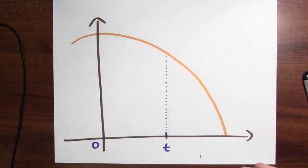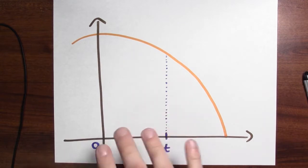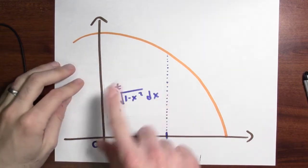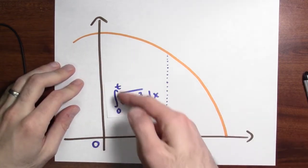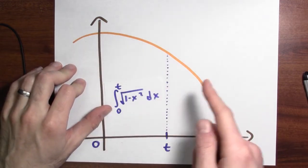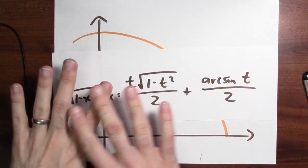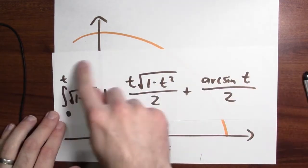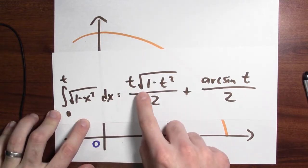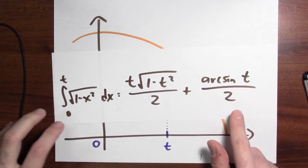We can also look at the accumulation function. Here's a zoomed-in copy of the graph of that semicircle. Here's 0 and here's t, so this area in here is exactly what the accumulation function calculates — it's the integral from 0 to t of the square root of 1 minus x squared dx. My claim is that accumulation function equals t times the square root of 1 minus t squared all over 2, plus the arc sine of t over 2.